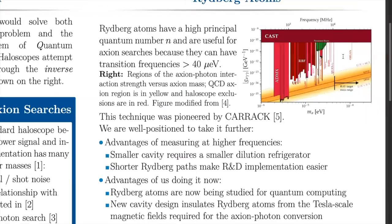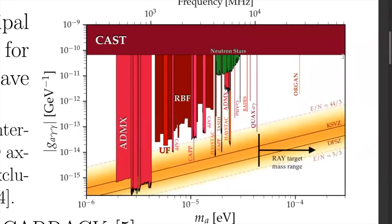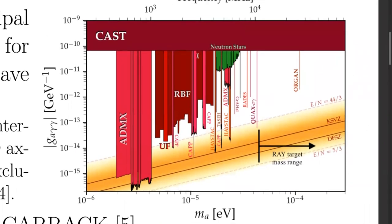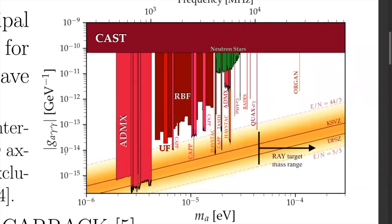This is an exclusion plot of the axion in the parameter space around the mass region that haloscopes are sensitive to. The x-axis is the axion mass, which is proportional to the cavity frequency, and the y-axis is the Primakoff interaction strength g sub a gamma gamma.